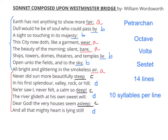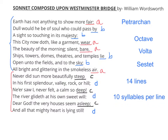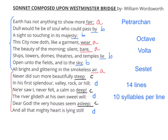Sonnets were introduced into English from the Italian Renaissance, and the first kind that arrived were the Petrarchan sonnets. These were 14 lines long with 10 syllables per line. The first eight lines are called the octave, and then there is an imaginary break before the last six lines, which are called the sestet. The break happens with the volta — which is Italian for 'turn' — and it happens between the eighth and the sixth line.